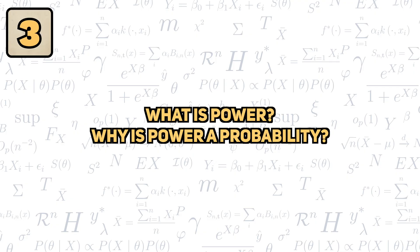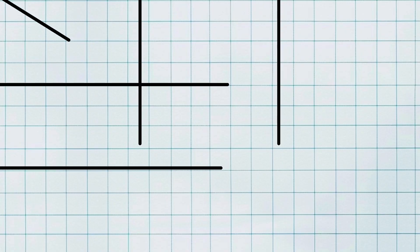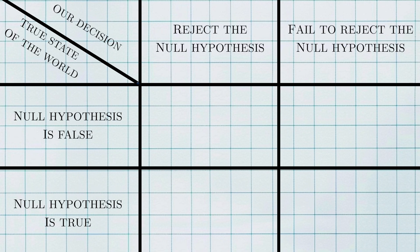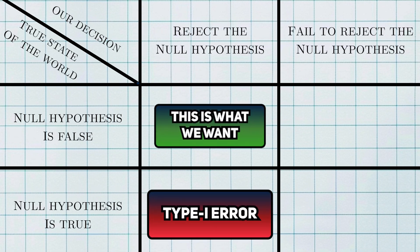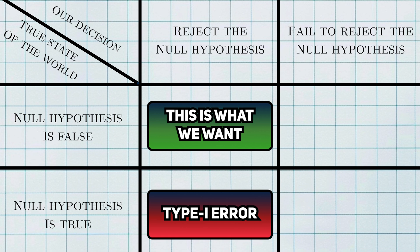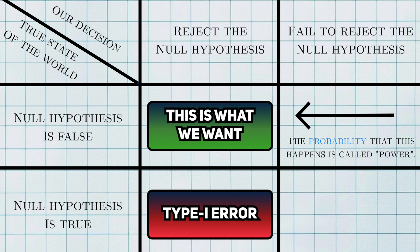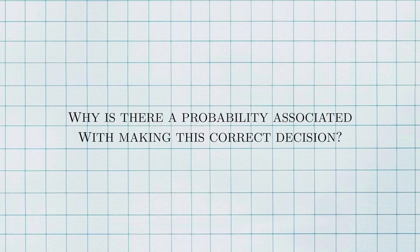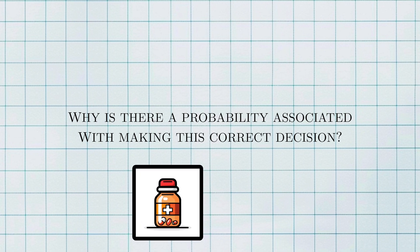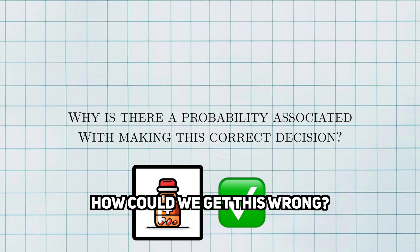What is power? Why is power a probability? Going back to that decision matrix from the last question, we saw that a type 1 error happens when we land in this cell. What we really want to do is land in this corner, where we choose to reject the null hypothesis when it's actually false. The probability that this happens is what we call power. You might be confused by the fact that there's a probability associated with making these decisions. You might think that if we have a treatment that works, then we should be able to correctly reject the null hypothesis every time. Nope.